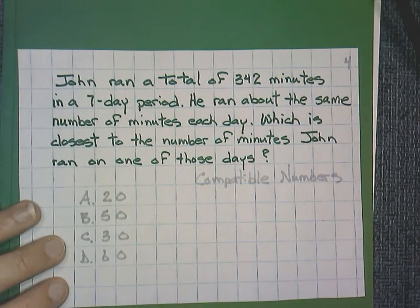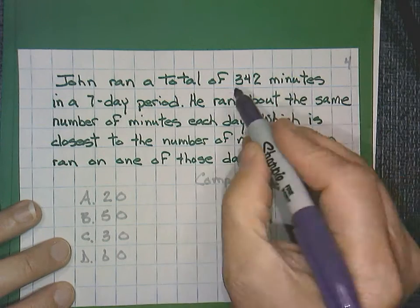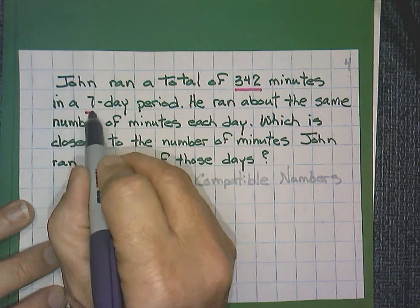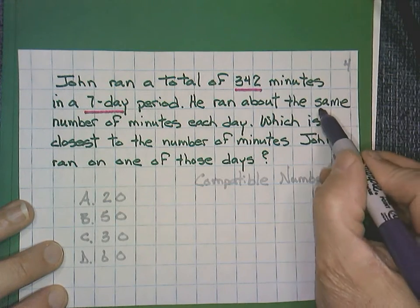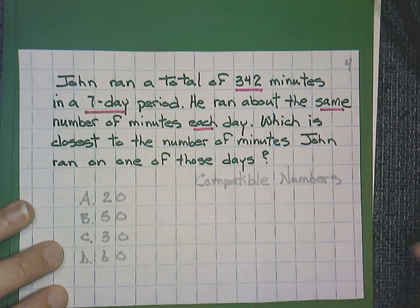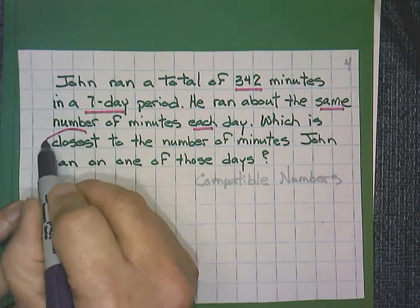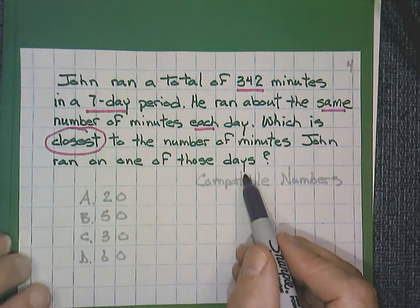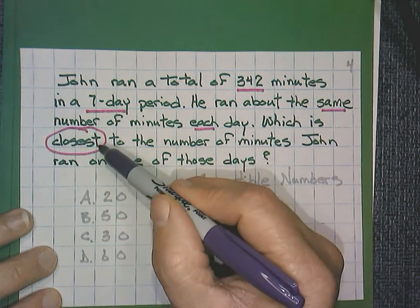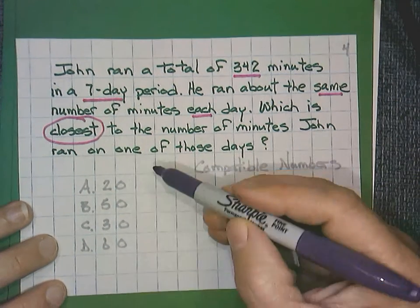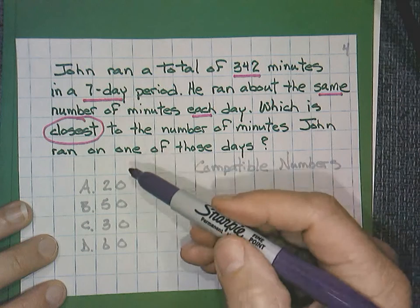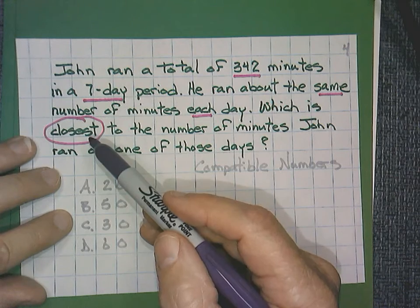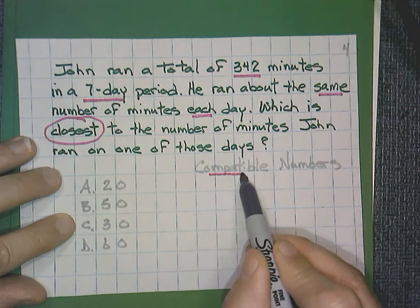This is rewritten from a state test several years ago. John ran a total of 342 minutes in a 7-day period. He ran about the same number of minutes each day, which is closest to the number of minutes John ran on one of those days. I see the word closest, right? I also see my answers all end in zeroes, which is a pretty strong clue that this is going to be an estimating. Remember that when we divide and estimate, we use compatible numbers.